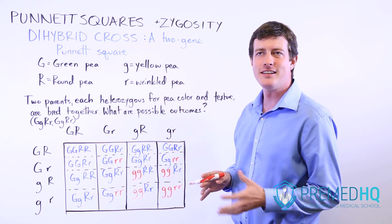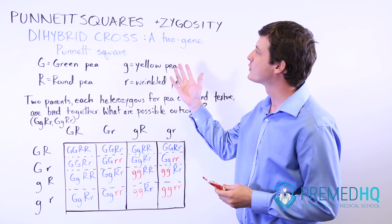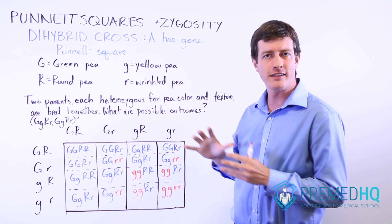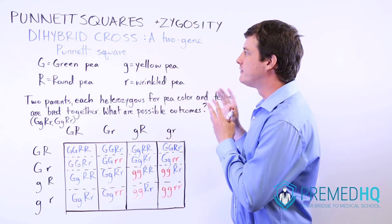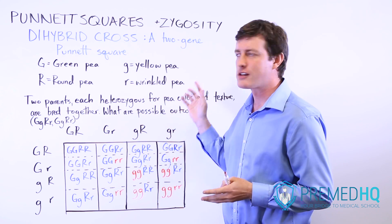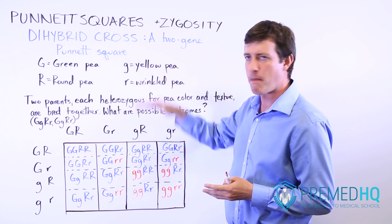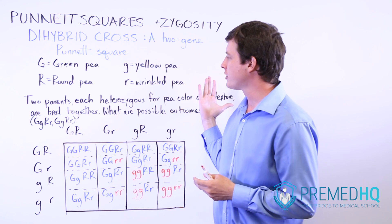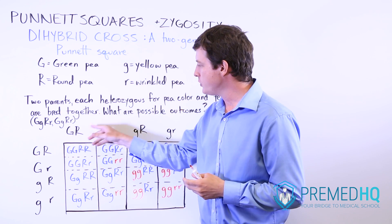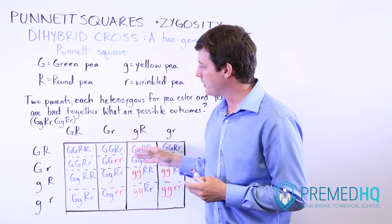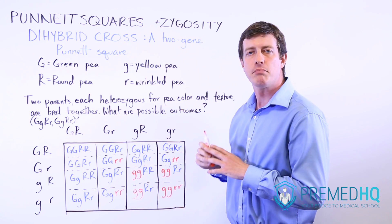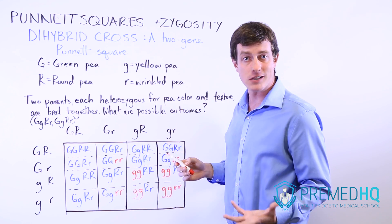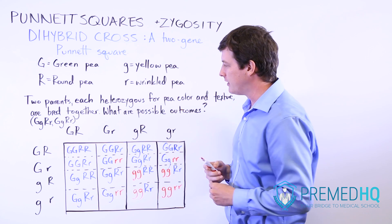Another commonly tested Punnett square is the dihybrid cross, where you're looking at the inheritance pattern of two different genes being transmitted from parents to their offspring. We're looking at two different genes being passed on — what are the possible arrangements that can occur? What are the possible outcomes in the offspring?